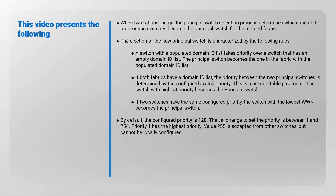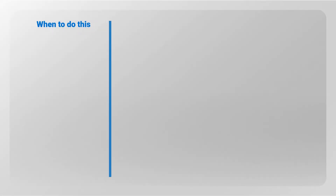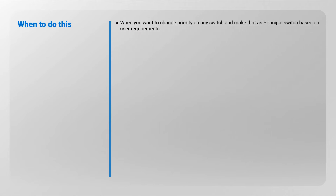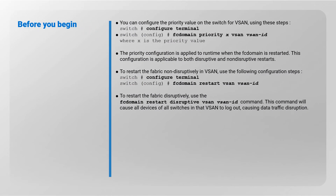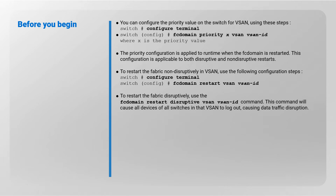When to do this: when you want to change the priority on any switch and make it the principal switch based on user requirements. Before you begin, you can configure the priority value on the switch for a VSAN using these steps: enter configuration mode and run the command 'fc domain priority X vsan <vsan-id>', where X is the priority value.